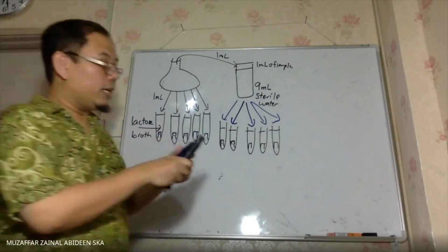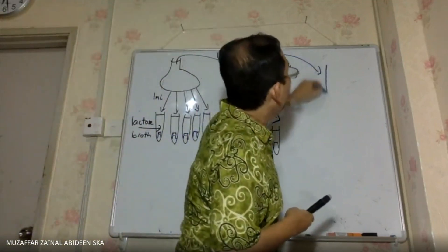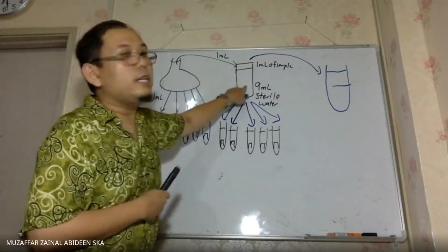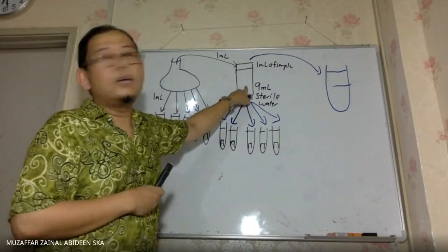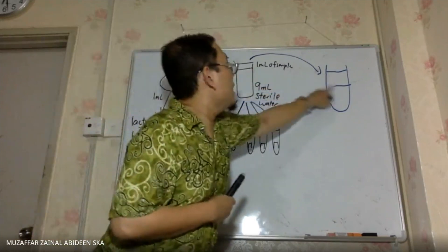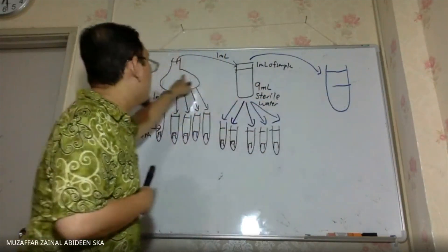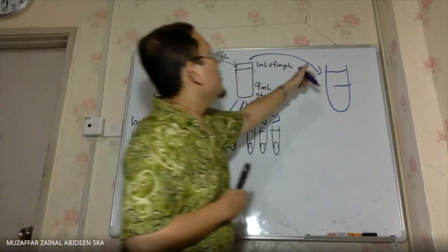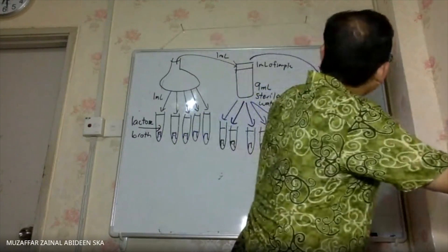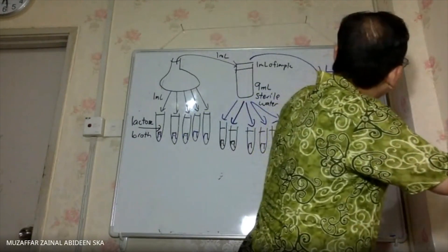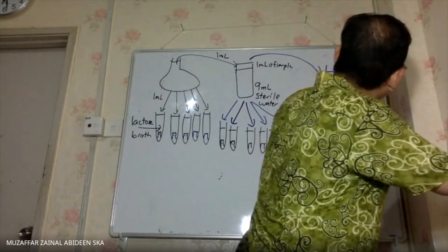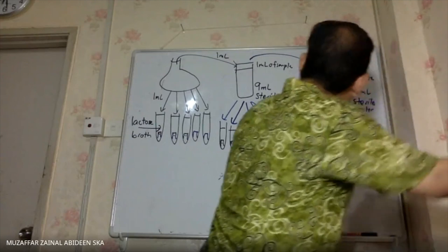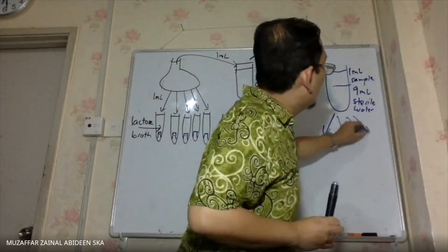You can do it again with another dilution using sterile water. So from here to here, it dilutes 10 times, and from here to here another 10 times dilution — that means 100 times from the first sample. So this is 1 ml of sample and 9 ml of sterile water, and then they are also divided into 5 test tubes.